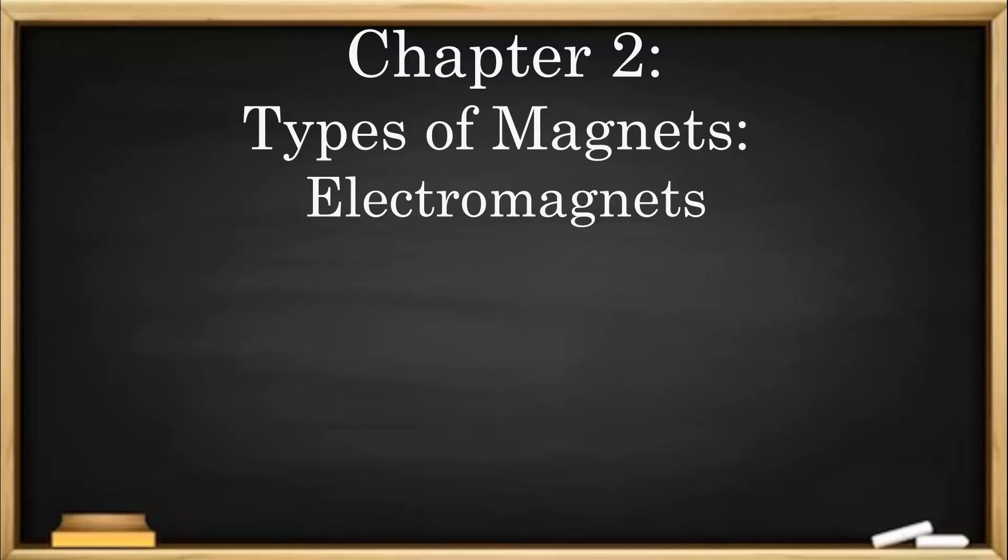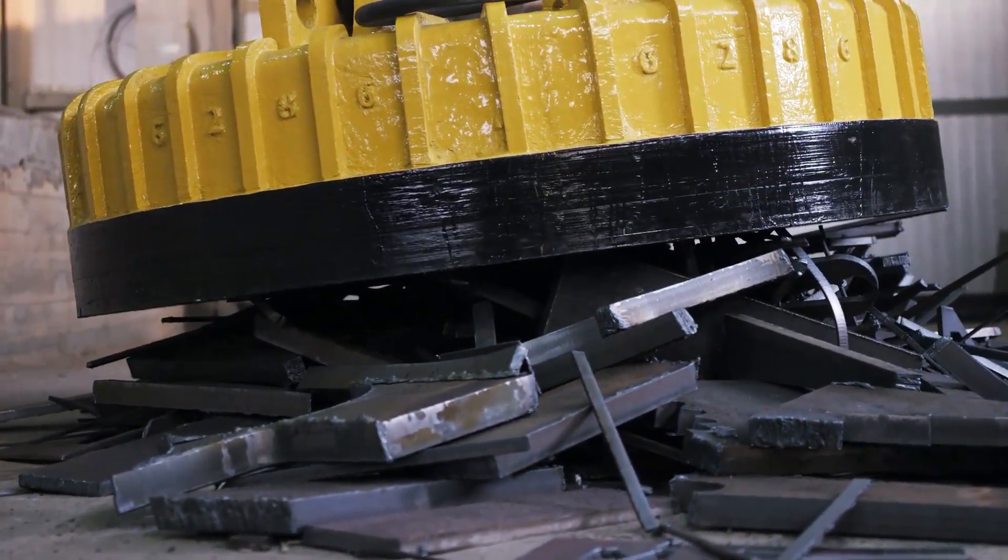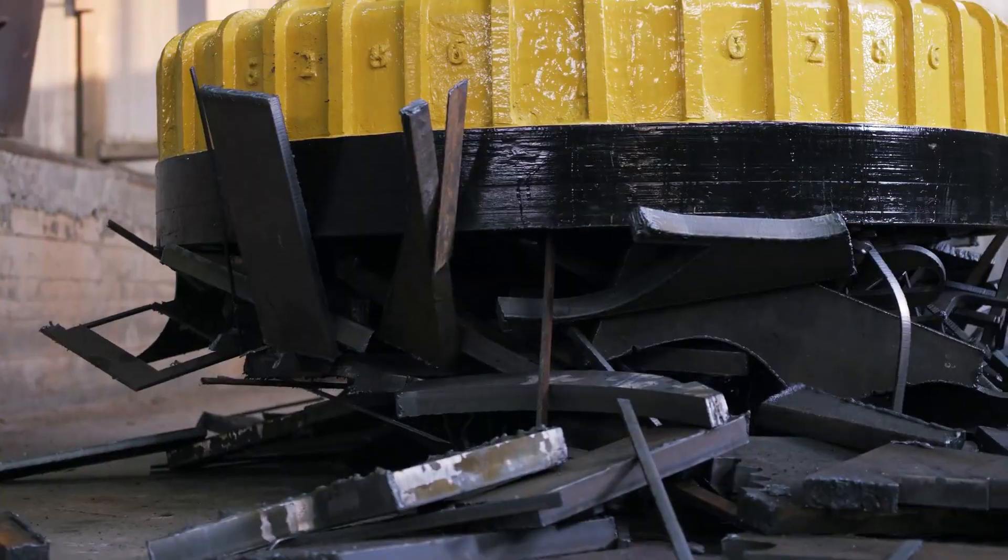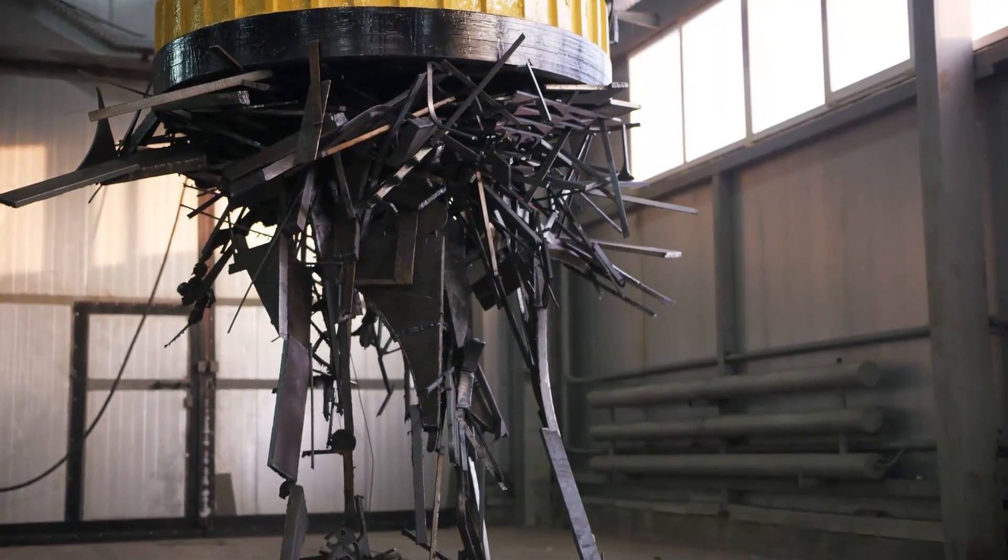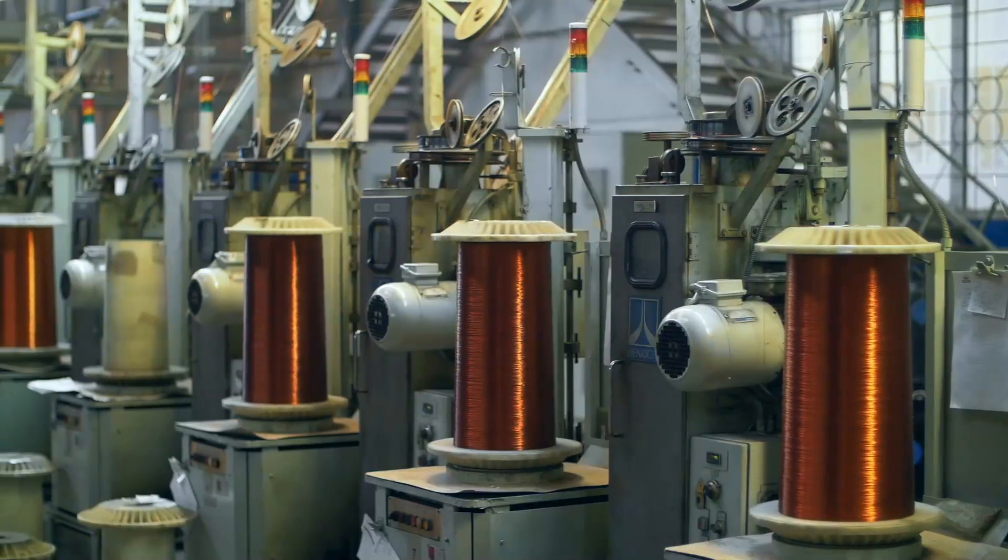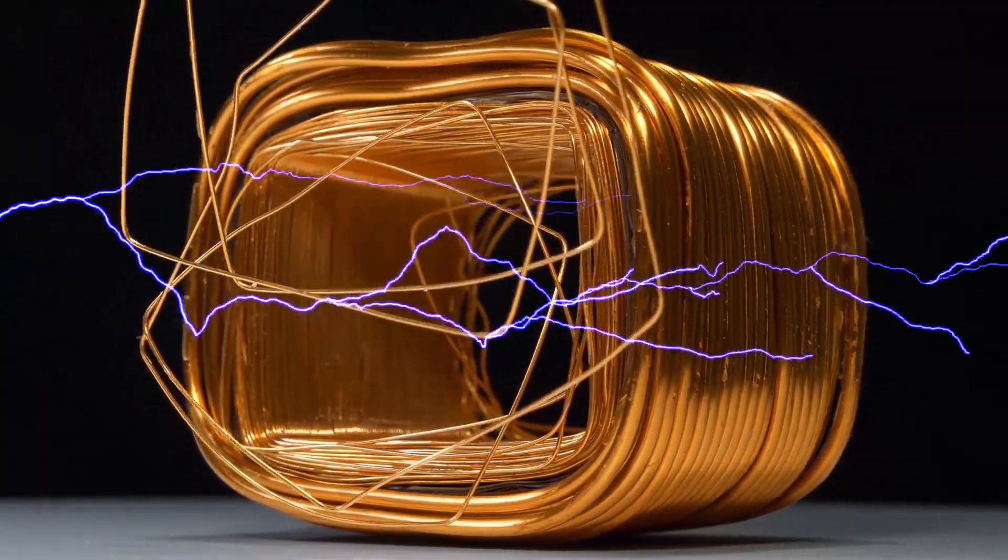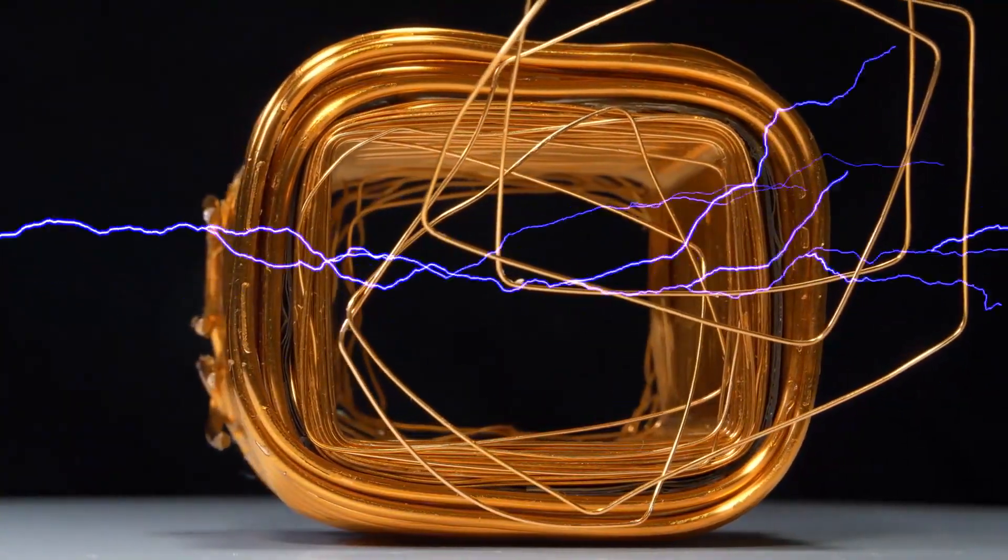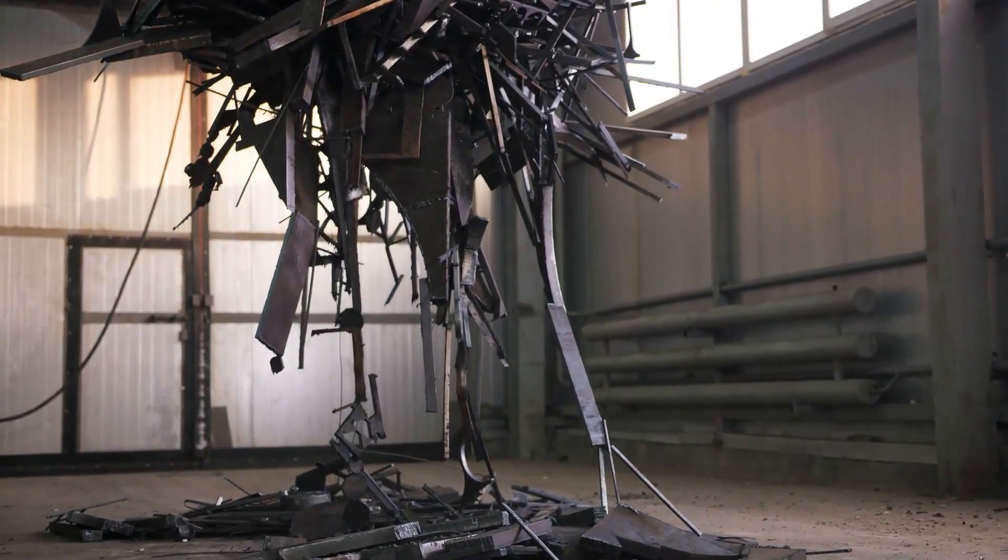Chapter 2: Types of Magnets - Electromagnets. Electromagnets are magnets that need electricity to work. When electric current flows through a wire, it creates a magnetic field. This is called electromagnetism. The magnetic force can be turned on and off by switching the electricity on and off, which is why electromagnets are useful in things like motors and cranes that pick up metal objects. To create an electromagnet, a wire is coiled around a piece of metal, often iron. When electric current flows through the wire, it creates a magnetic field. The metal inside the coil helps strengthen the magnetic field. The strength of the electromagnet depends on the number of coils in the wire, the amount of electricity flowing, and the type of metal used.